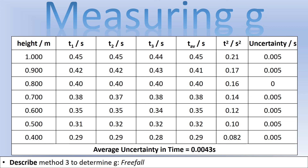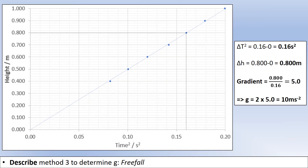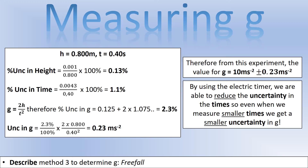With the electromagnetic timing system, I collected heights, three time measurements each, average times, t-squared values, and calculated the uncertainty in time - which is much smaller than before, giving a smaller average uncertainty. Since this is all in the vertical direction, I plot H against t-squared as in method 1. The gradient is 5.0, giving G = 10 m/s². The percentage uncertainty is 2.3%, giving an uncertainty of ±0.23 m/s², so G = 10 ± 0.23 m/s².